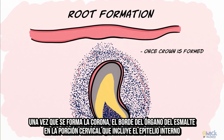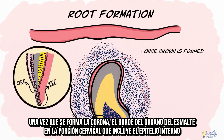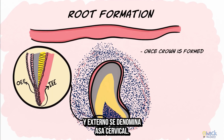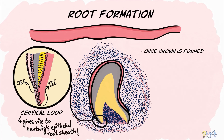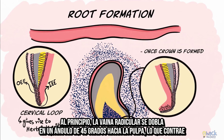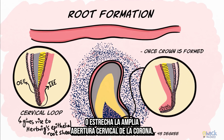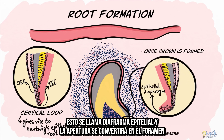Once the crown is formed, the rim of the enamel organ at the cervical region where the inner enamel epithelium meets the outer enamel epithelium is called the cervical loop. This cervical loop starts to proliferate and gives rise to Hertwig's epithelial root sheath. At the beginning, the root sheath bends at an angle of 45 degrees towards the pulp, constricting the wide cervical opening of the crown. This is called the epithelial diaphragm and would eventually become the apical foramen.